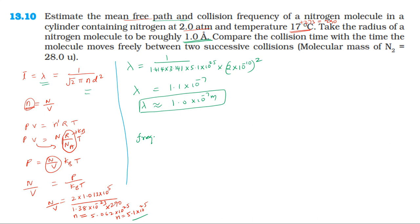For collision frequency, the formula is 1 divided by the time period, which equals RMS velocity divided by mean free path. This is also expressed as 1 divided by the relaxation time. So collision frequency equals RMS velocity divided by mean free path.